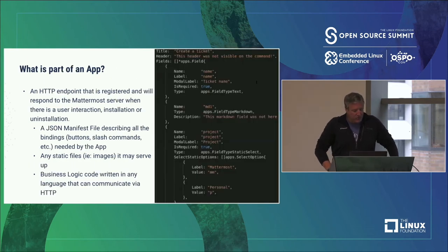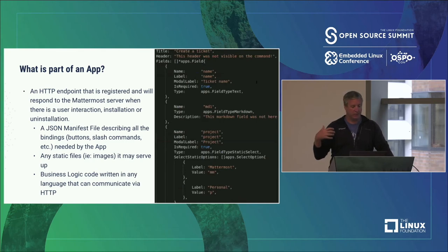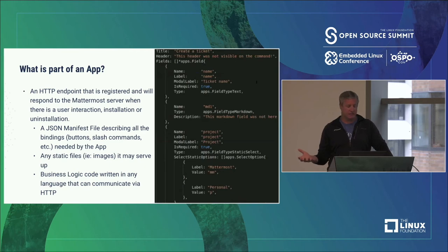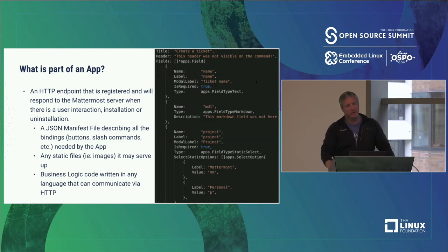How does an app actually work? An app is an HTTP endpoint that is registered and will respond to the Mattermost server when there is a user interaction or installation. It's basically a JSON manifest file that you upload. It describes declaratively what UI elements you need, can include embedded or statically uploaded images, and links out to your serverless function for any button interactions. This makes it handy and convenient. It's also nice from a security perspective, especially for our cloud environment, since it's calling out to some other service rather than running within the Mattermost infrastructure.